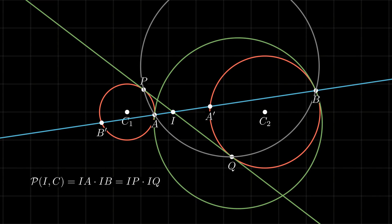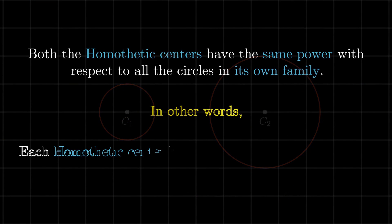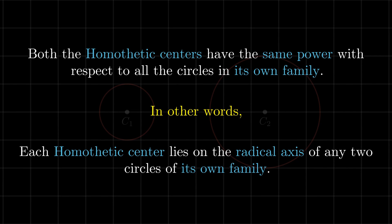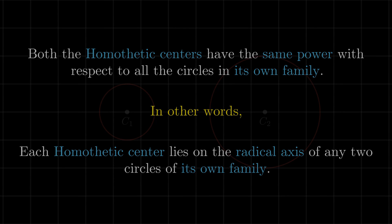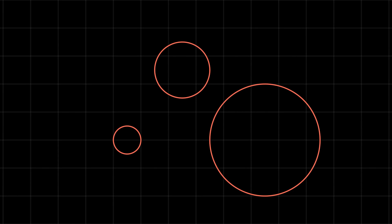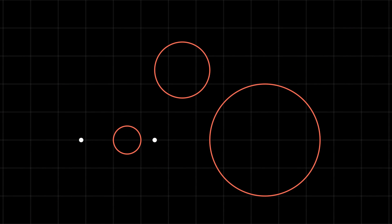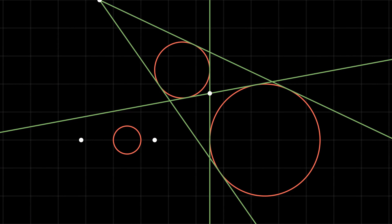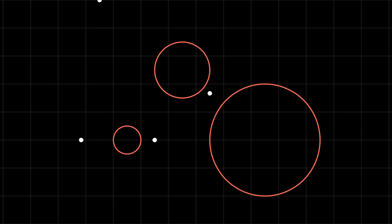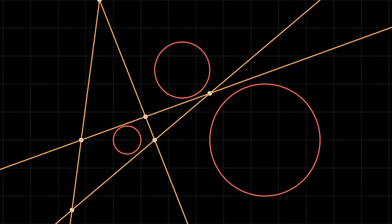It is not hard to see that the power of the external homothetic center with respect to any circle in its own family also remains the same. This means the homothetic centers lie on the radical axis of any circle from their own family. Considering a configuration of three circles, taken two at a time, each pair gives two homothetic centers, giving a total of six points. Interestingly, just four lines cover these six points, and each of these four lines is called a homothetic axis of the given circles.